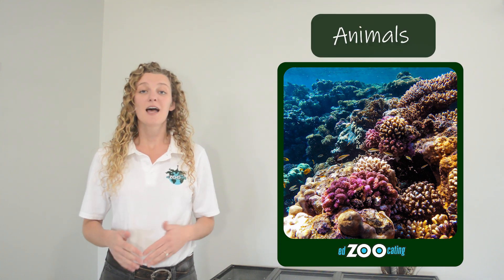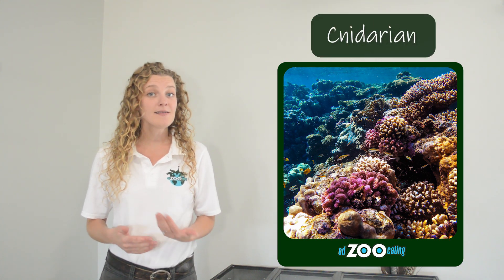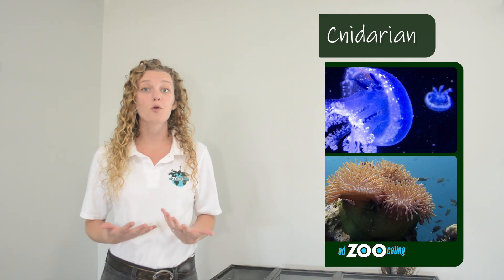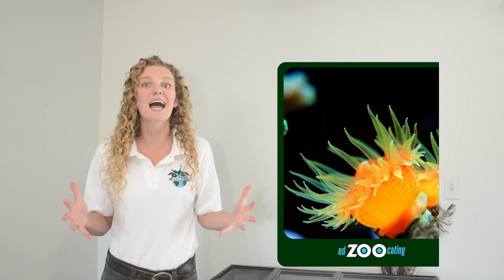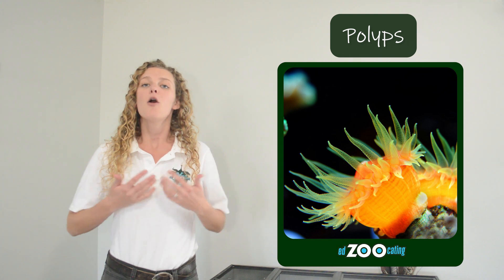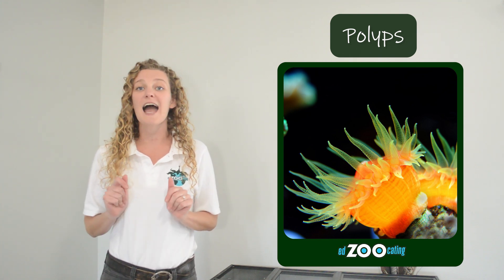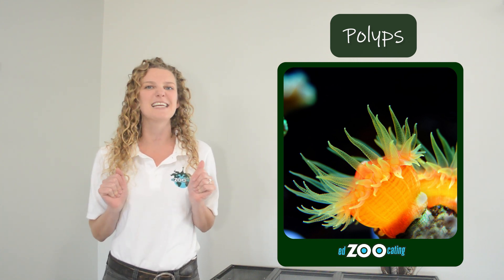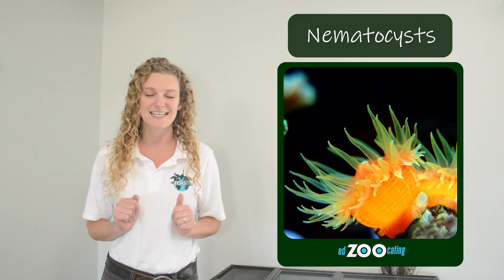Of course there are lots of biotic factors or living parts of coral reef ecosystems, including the coral itself. Corals are classified as animals — they're a type of cnidarian, as are their relatives the jellyfish and the sea anemones. An individual coral is actually a whole bunch of tiny little animals called polyps that all work together to survive. For most corals, polyps kind of look like and act like upside-down jellyfish, and like jellyfish have tentacles that are covered in stinging cells called nematocysts.